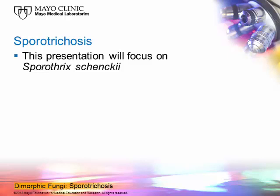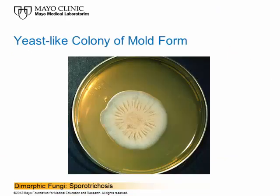This presentation will focus on Sporothrix schenckii, which is a bit different from all the others. This organism is dimorphic, with a yeast and a mold form, but it generally causes subcutaneous infection resulting from direct trauma to an area of skin or exposed surface like an extremity, where the mold form is introduced from the environment into the tissue and then converts inside the host to the yeast form. It is found worldwide, primarily in tropical parts of the world.